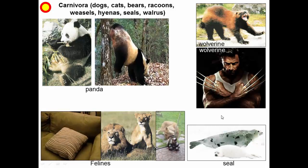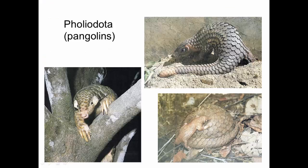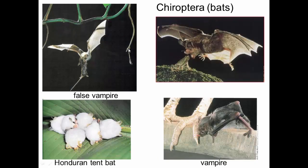Next are Pholidota, or pangolins — a really interesting group. They don't look like they have fur; they have scales on their body. They're ant- and termite-eaters, using their claws to rip open mounds. They spend most of their time curled up. Pangolins have become a target of the illicit trade in animal parts and are in danger of extinction due to over-hunting. There's even a campaign to get Disney to make a pangolin movie so people will care before they're driven extinct.